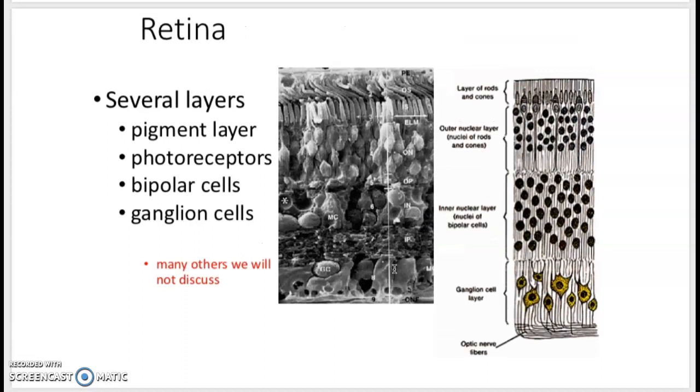So the retina itself has multiple different layers. There's a pigment layer, a layer of the photoreceptors which are the rods and cones, a layer of bipolar neurons, and then a layer of ganglion cells that synapse into the optic nerve.